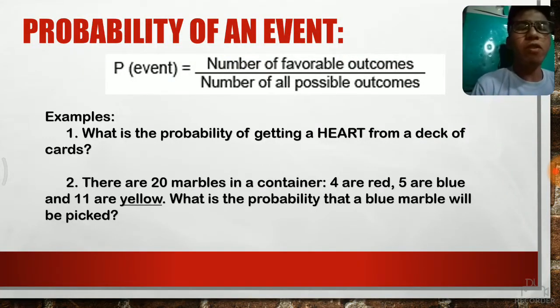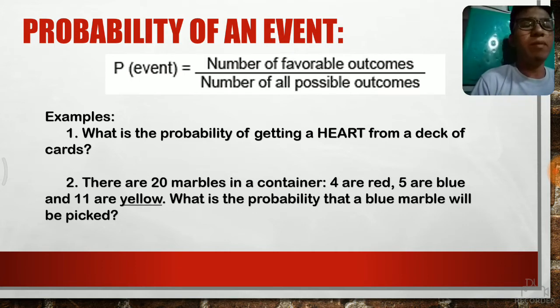In this video, we will try to solve the probability of an event. The formula in finding the probability of an event is P of E equals the number of favorable outcomes all over the number of all possible outcomes.